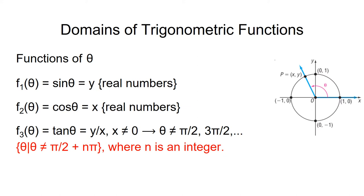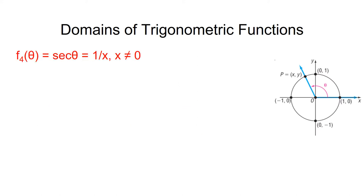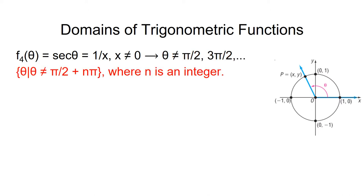n can be any integer, including negative ones. When we examine secant theta, we see that it has the same restrictions on it as tangent theta, namely that x cannot equal 0. This means theta cannot be pi over 2, 3 pi over 2, and so on. So the domain for secant of theta is the same as that of tangent theta.